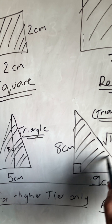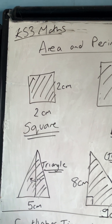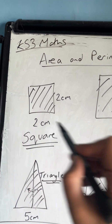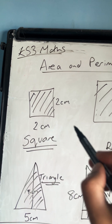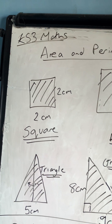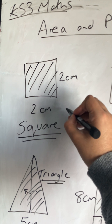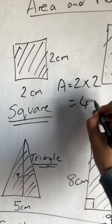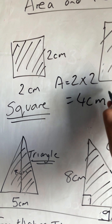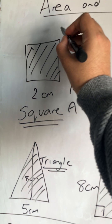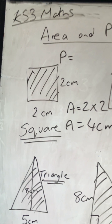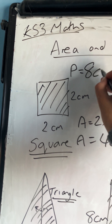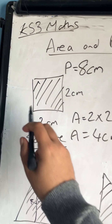The area of a square is length times length — because length and width are the same, it's L×W, or L×L, or L squared. For a square with side 2cm, the area is 2×2 = 4 centimetres squared. The perimeter of the same square is 2+2+2+2 = 8 centimetres.